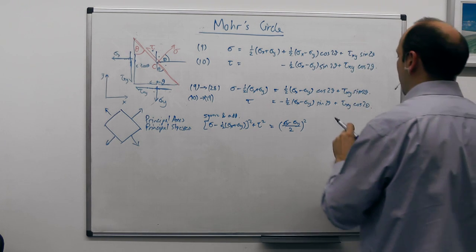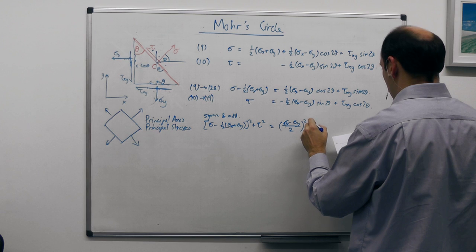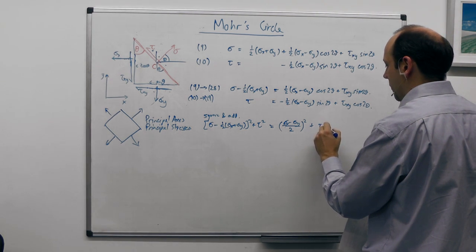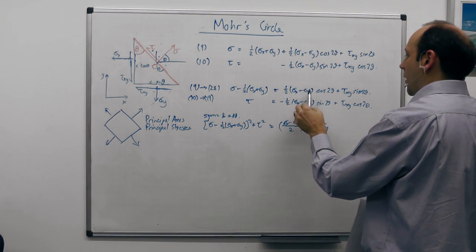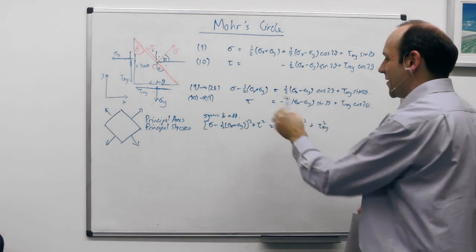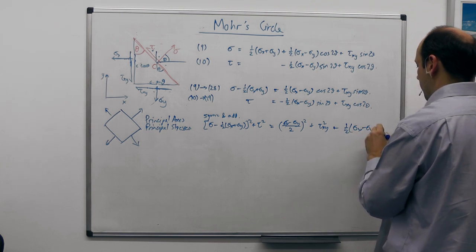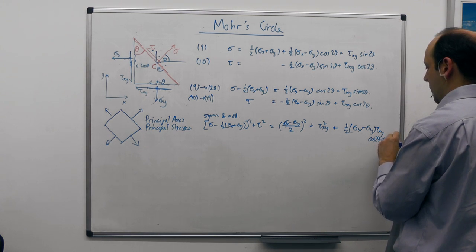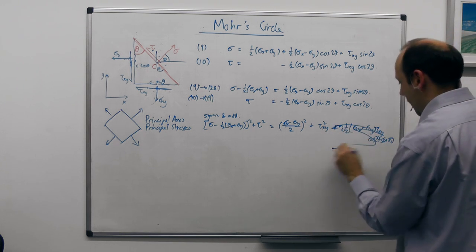When we square and add, we get sin²2θ and cos²2θ terms, so those also combine to give 1, plus τ_xy². The cross terms — twice that times that, plus twice that times that — differ only by a minus sign, so they cancel out entirely and disappear.